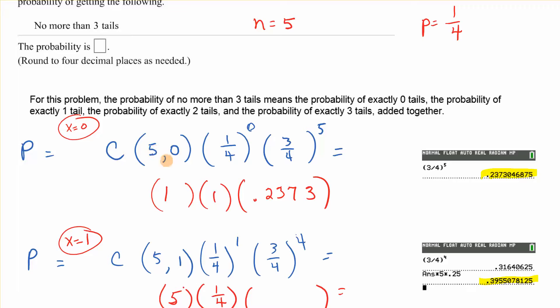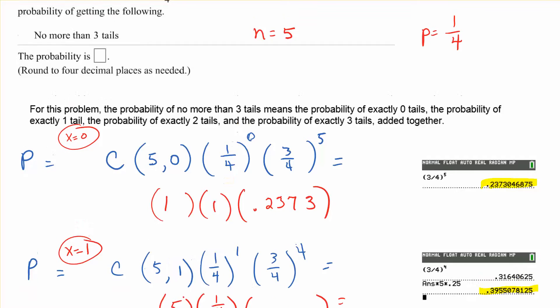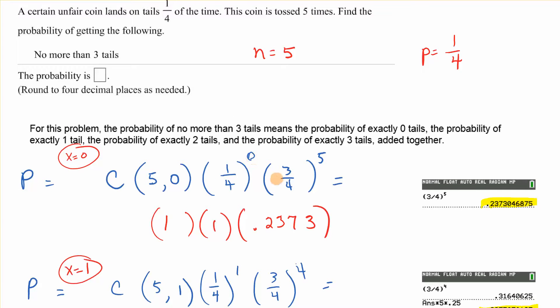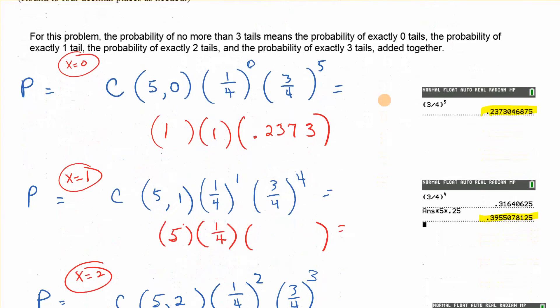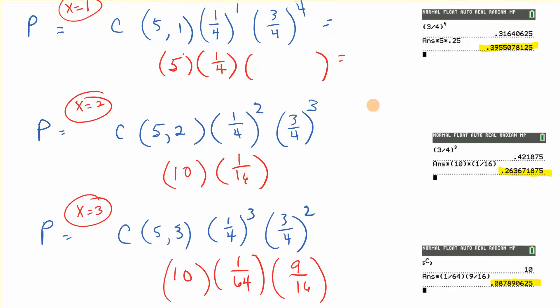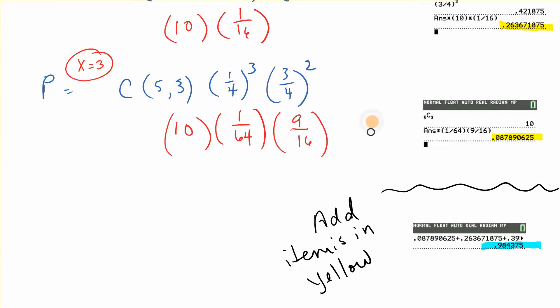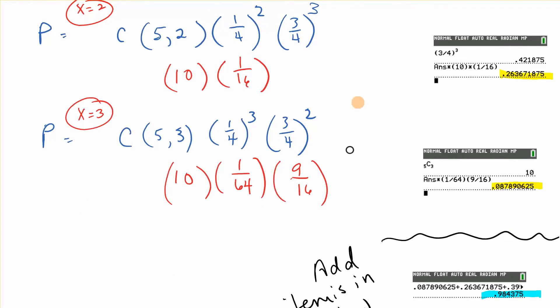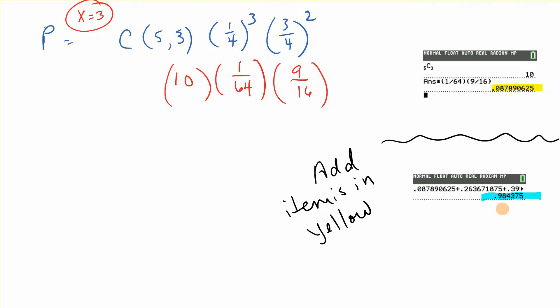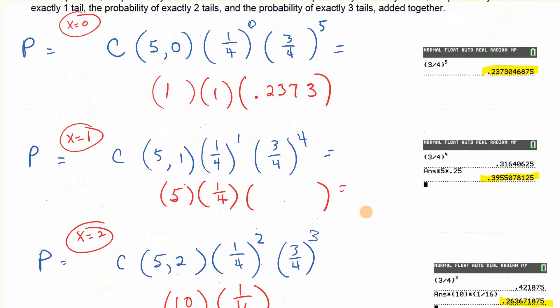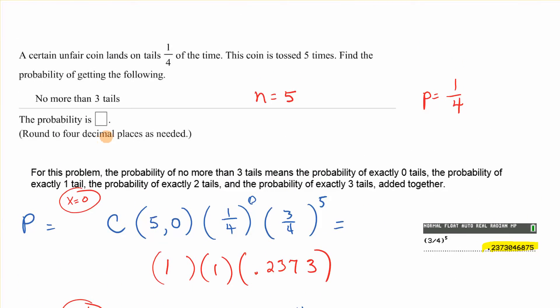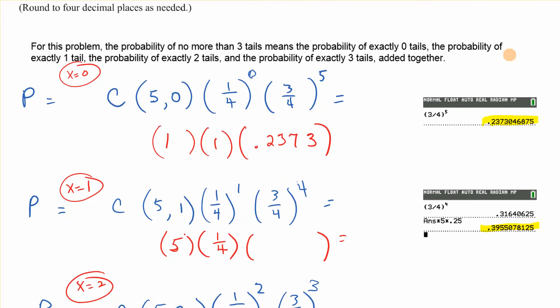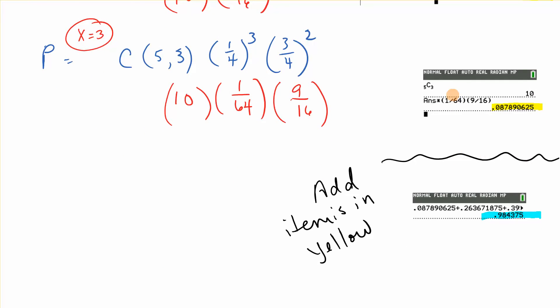So if x is zero, you have five comma zero combination, one fourth is the probability to the zero power, and then one minus one fourth is three fourths to the five minus zero, so you see we're doing that. We get a decimal answer, three divided by four to the fifth. Then you do it for x equals one, you do it for x equals two, you do it for x equals three. And then you get all of these things, the answers for each one in yellow, and we're going to add all of those together. And your answer is in blue, 0.984375, and that would be the answer that goes in the box, rounded to four decimal places. So you're just repeating this formula over and over with just different values and then adding to get your final answer.